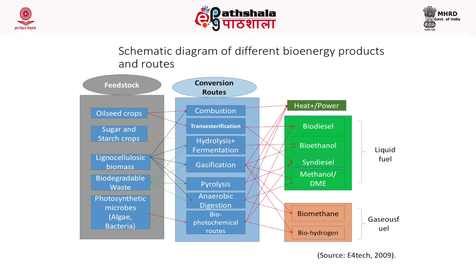Biodegradable waste can also be used for fermentation, gasification, pyrolysis, and anaerobic digestion. Photosynthetic microbes — that is algae, algal biomass, and bacterial biomass — are converted by biochemical routes like photolysis (direct or indirect) and fermentation (dark or photo fermentation) to produce biohydrogen, as well as syndiesel, biodiesel, heat, and power.